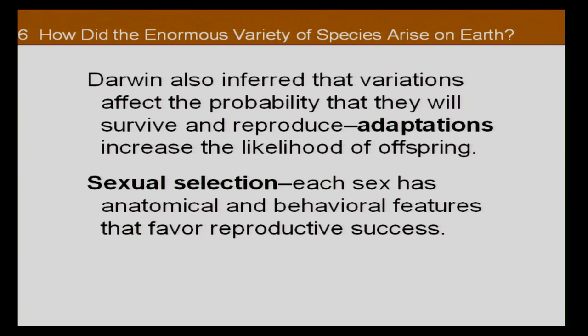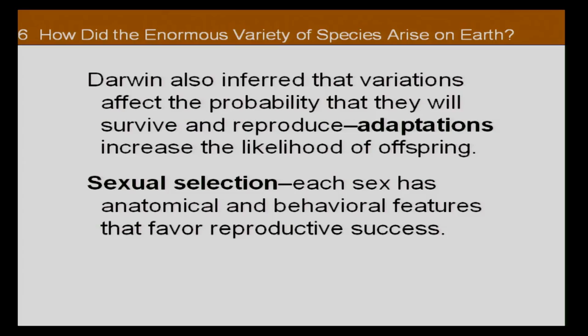Darwin also inferred that variations affect the probability of survival and reproduction. If you're strong and smart about getting away from danger, you have what's called adaptations that increase the likelihood of your offspring surviving. Little by little, generation by generation, traits particularly useful for your environment will help you survive. Another realm of this theory is called sexual selection — each sex has anatomical and behavioral features that favor reproductive success, either in attracting mates or helping you survive long enough to get a mate.